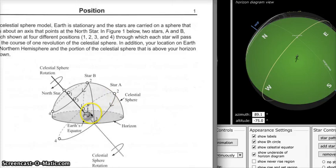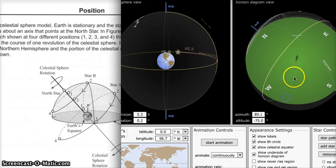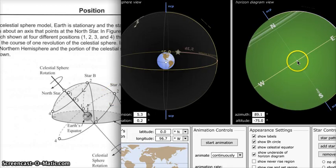So for our equator person here, when star A is highest, that would be directly above our equator person's head. And that's exactly what we're seeing in the simulation here.